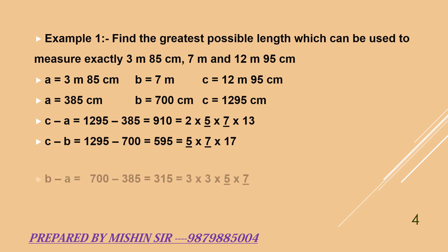Now we find B minus A which is equal to 700 minus 385. We get 315. On factorizing 315, we get 3 into 3 into 5 into 7. We underline common terms to find the HCF. So HCF will be 5 into 7 which is equal to 35. So the greatest possible length which is used to measure exactly 3 meter 85 cm, 7 meter and 12 meter 95 cm is 35 cm.